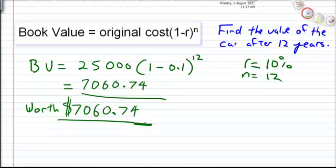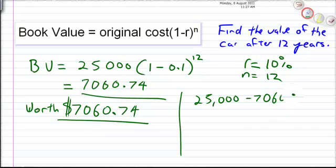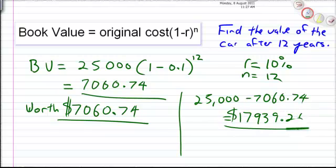So that means the car is now worth $7,060.74 after the allotted 12 years. So it hasn't got down to nothing. If you wanted to work out how much it has depreciated, you'd get your $25,000 which is your original cost, take away $7,060.74, and it will give you how much the car has dropped in value over that time, which is $17,939.26.